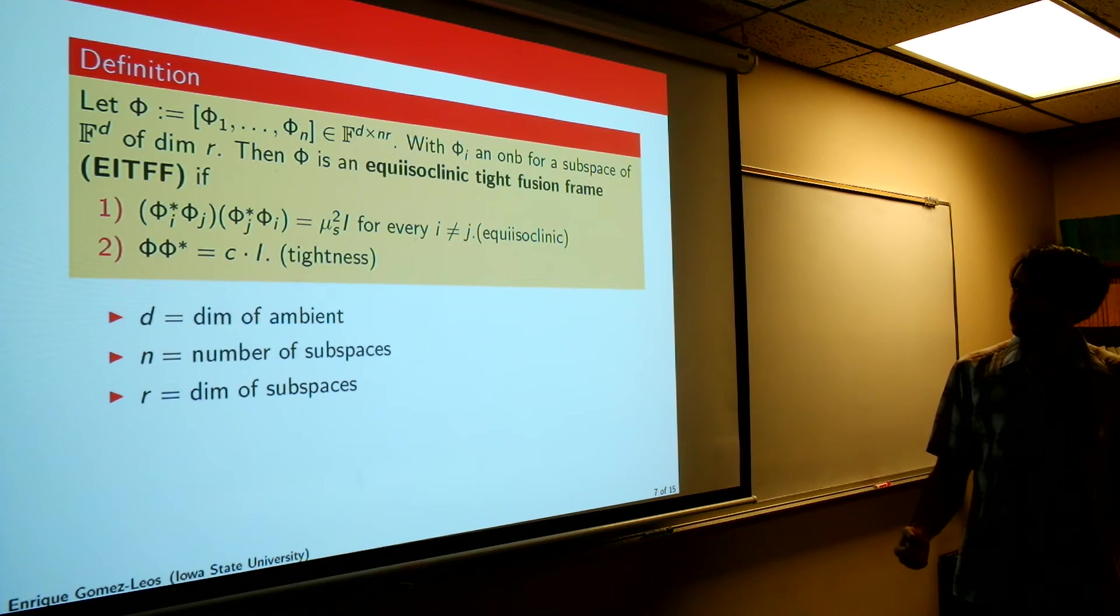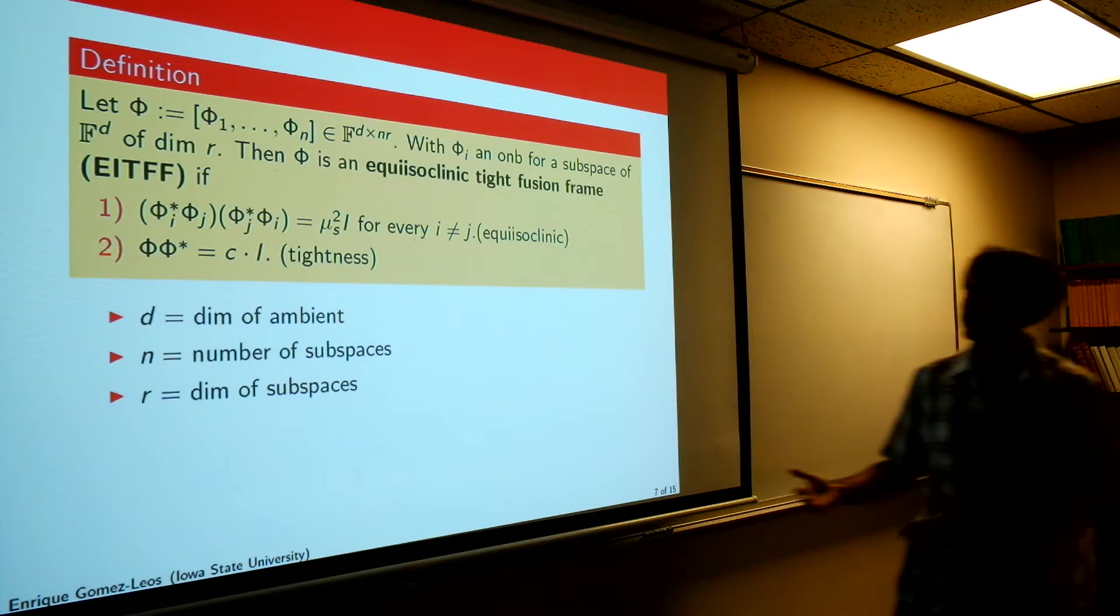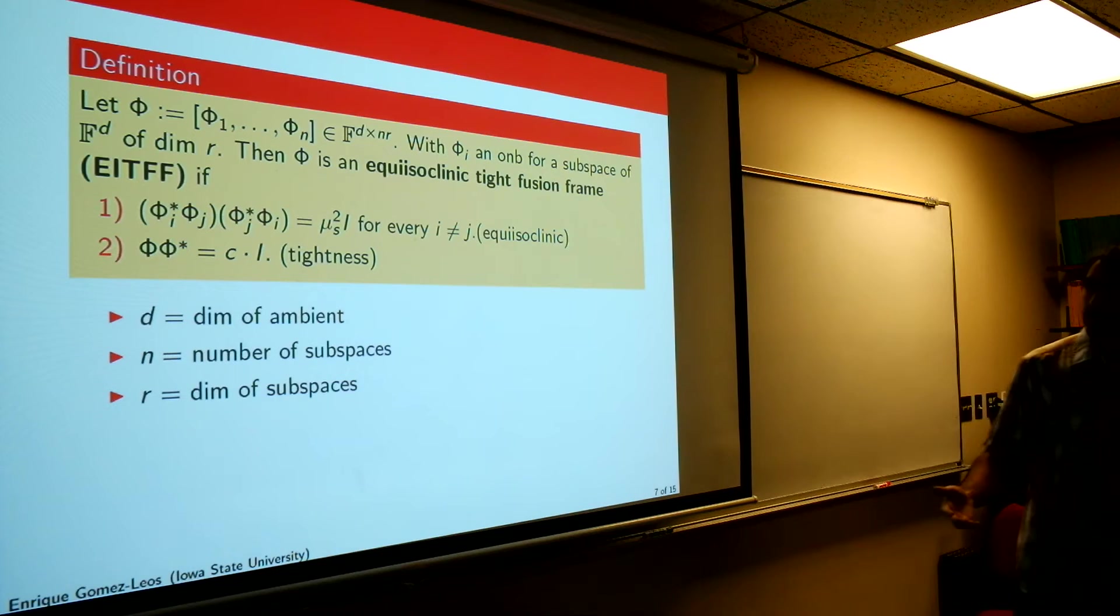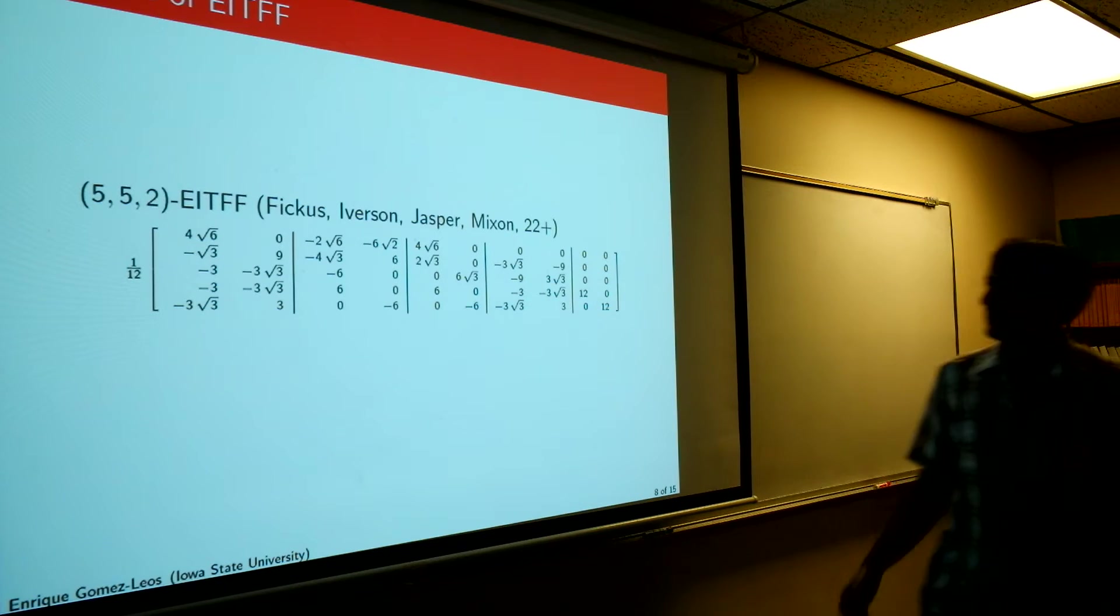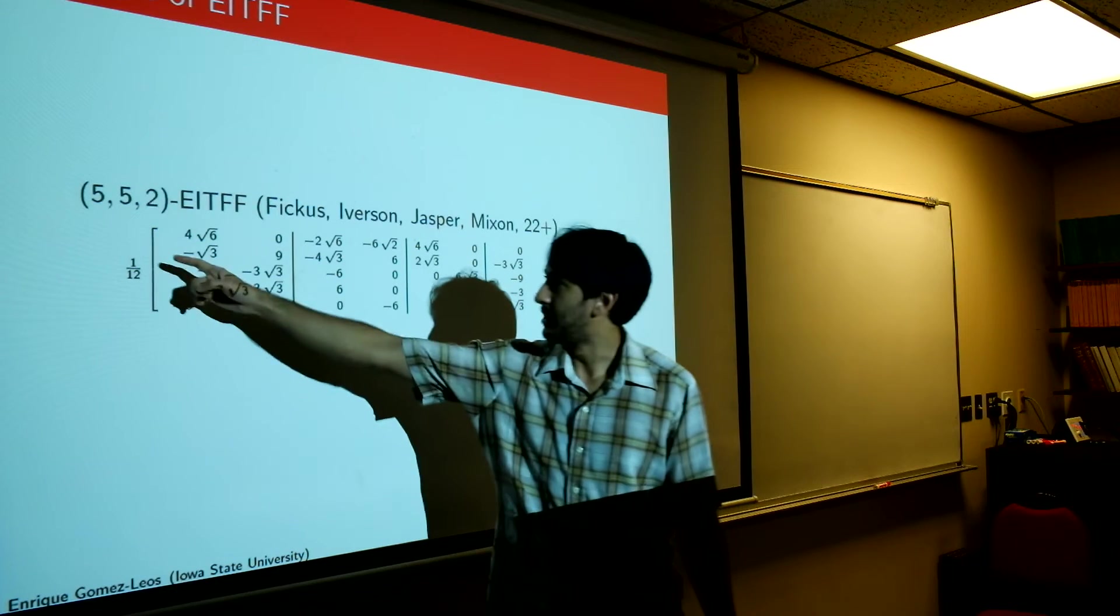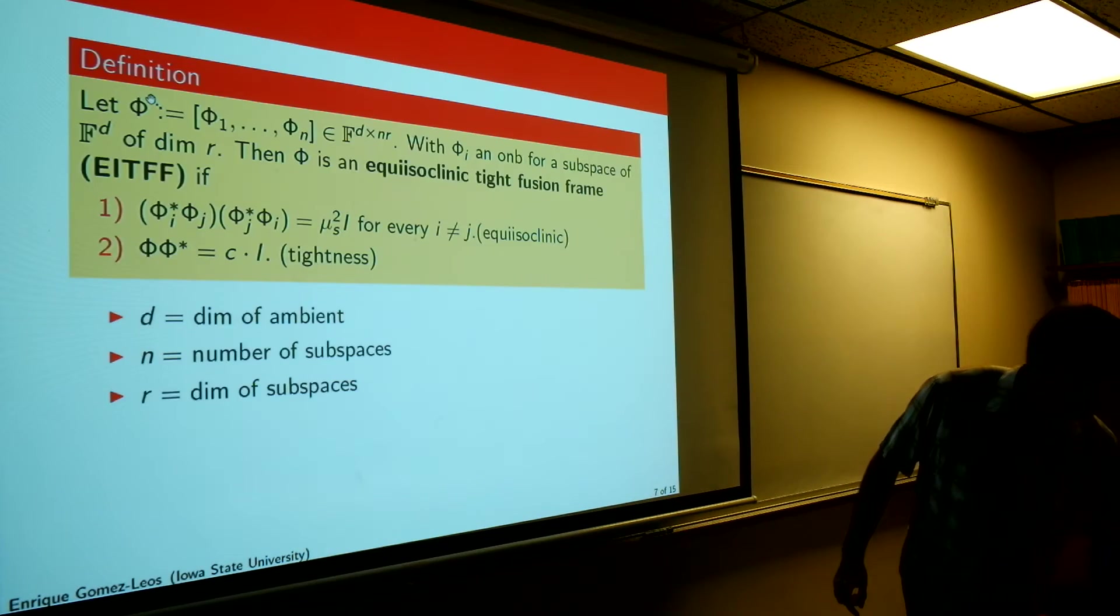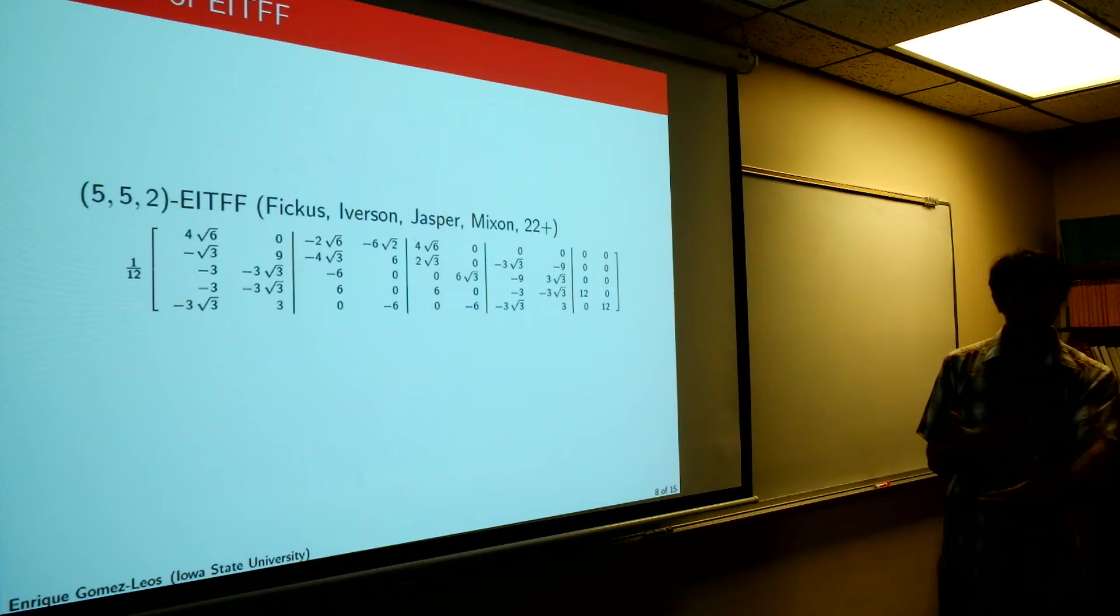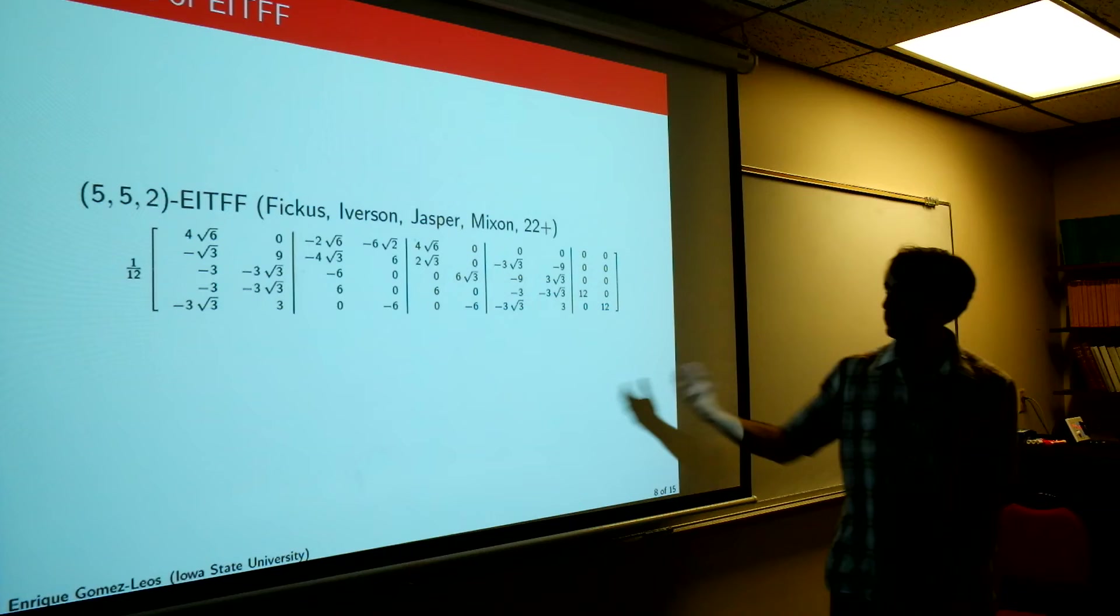So every ETF is an EITFF, every equiangular tight frame is an EITFF, because I can take r to be one. So I get that for free. But what are some other examples? So here's another, here's an example. So this is a 5, 5, 2. I'm claiming that this is the phi in the previous slide. I'm claiming that this example is an example of a phi. So I can deliver you an EITFF by providing you the fusion synthesis matrix. And this is what I'm claiming is one of them.